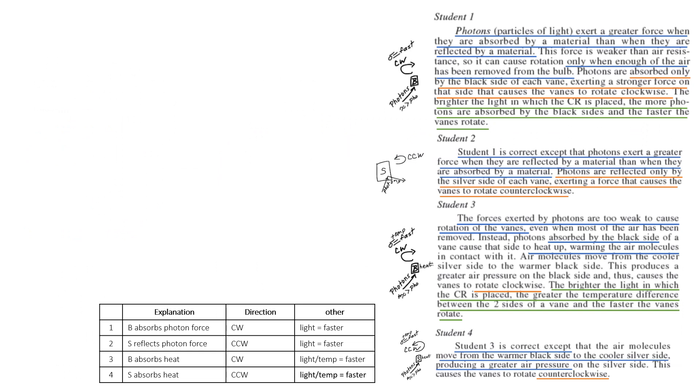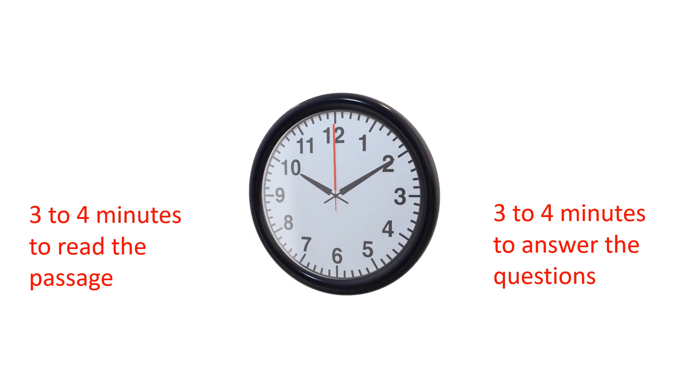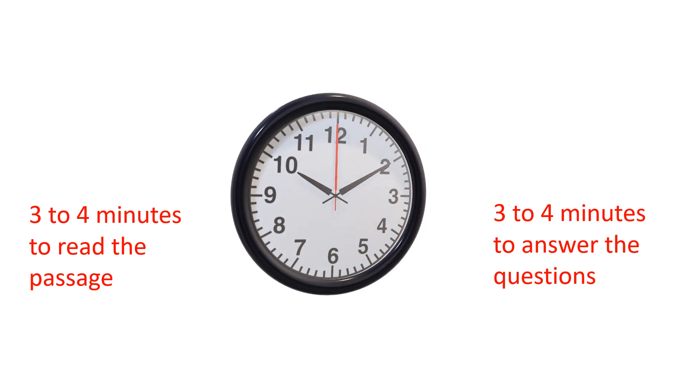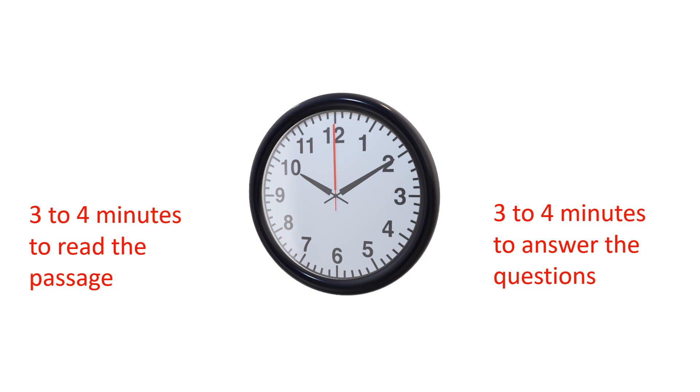Put all four together. Student one and student two are similar in that the photons, the light itself is causing the rotation. It's just the direction is different. One absorbs light, one reflects light, and it causes a greater strength. Student three and four are similar, and the heat is what causes the rotation. But one has the heat focused on the black side causing a clockwise rotation. The other has the heat moving to the silver side causing a counterclockwise rotation. You should take about three to four minutes to read the passage and then another three to four minutes to answer the question. You have a little less than seven minutes to do this entire passage, but I find the questions are generally faster if you understand the reading on this passage.